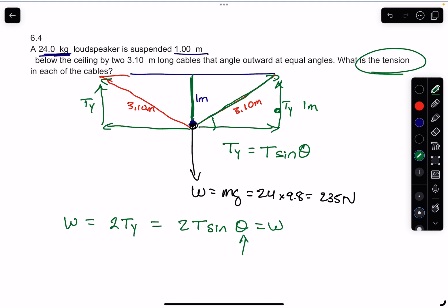I did inverse sine - I said sin⁻¹, and I typed in my calculator one over 3.10, which gives me what this angle is. That gives me the angle, and then I plug that into here and then I can solve for T.